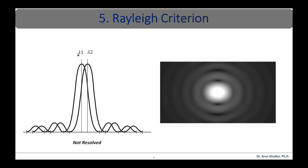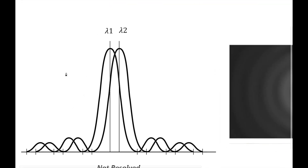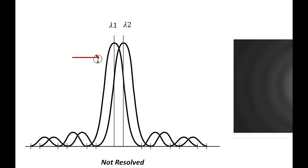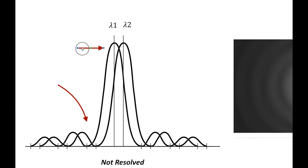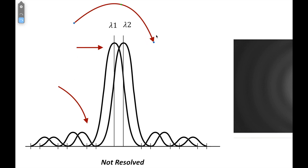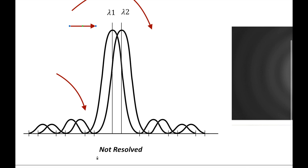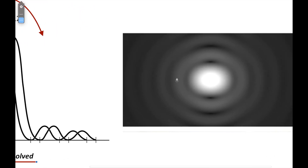Now let us see another condition. When the difference in wavelengths is so small that the central maxima corresponding to the two wavelengths come still closer, as shown in this diagram, the resultant intensity curve is quite smooth without any dip — the dip is very very small. This curve appears as if there is only one wavelength, somewhat bigger and stronger. Hence, according to Rayleigh's criterion, the two wavelengths are not resolved. The corresponding intensity distribution pattern is shown in this picture.